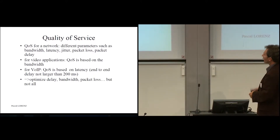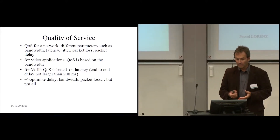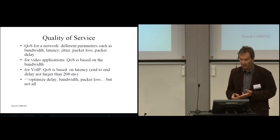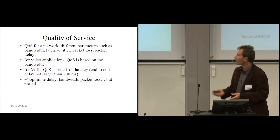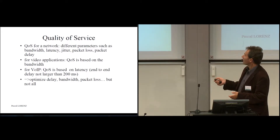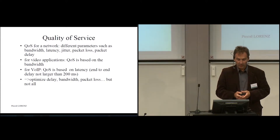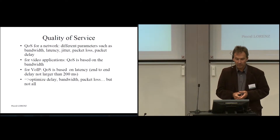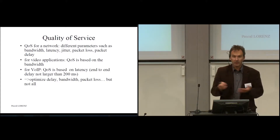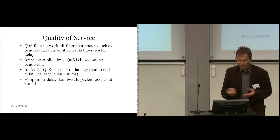For Quality of Service, there are different parameters which should be taken into account: bandwidth, latency, jitter, packet loss, and packet delay. But not all parameters are necessary. For example, for video applications, what is important is the bandwidth — you should have a big bandwidth to transmit the information. But for Voice over IP, it consumes very little bandwidth; what is important is more the latency. Depending on your application, one or another parameter should be taken into account, but not all.